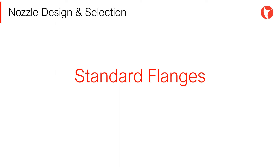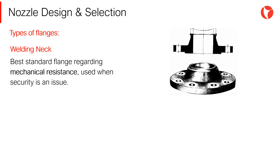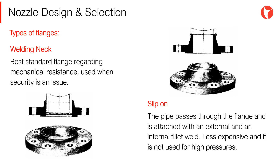There are many different flange types. Some of the types most used in pressure vessels are: Welding Neck flange — butt welded to the pipe, it is the best standard flange regarding mechanical resistance, used when security is an issue. Slip-On flange — the pipe passes through the flange and is attached with an external and internal fillet weld. This type is less expensive than the previous and is not used for high pressures.